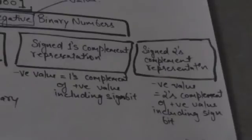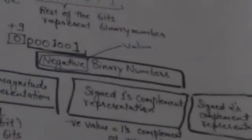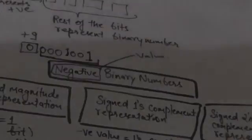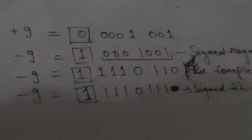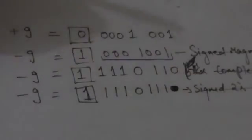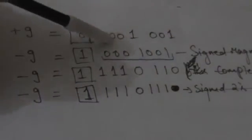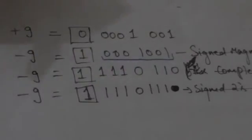Now let's see how they represent negative values. This signed binary number represents a value of +9. Here the leftmost bit is 0, which indicates that this binary number represents a positive value, and the rest of the bits form a binary number whose value is 9.